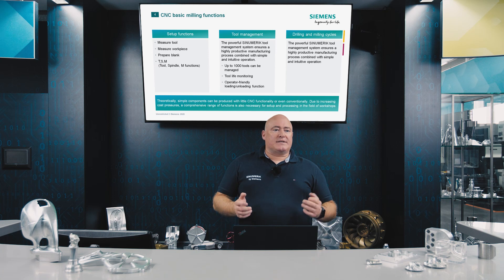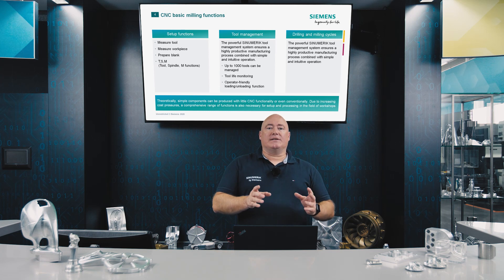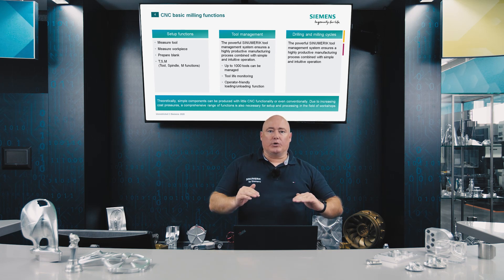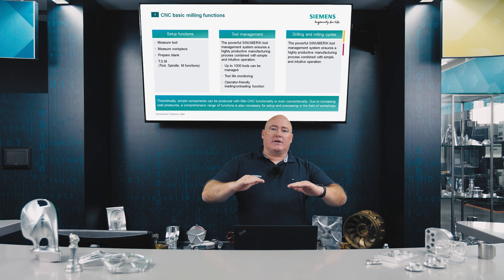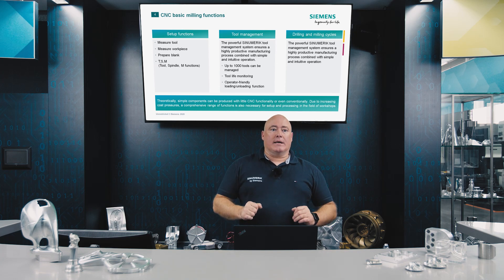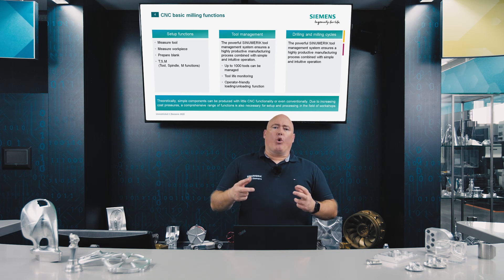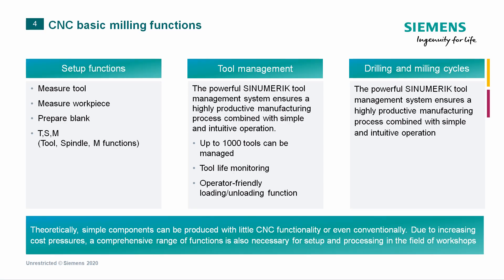The CNC functions specific to milling are split into three blocks. First, setup functions — the setup times required to get the machine ready for production. Effective tools to minimize setup times also reduce ancillary costs. Then there is tool management, used to optimize management of drills, milling cutters, and other tools. Finally, there are the drilling and milling cycles addressed for each area.